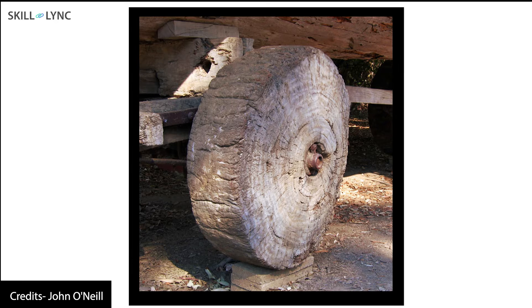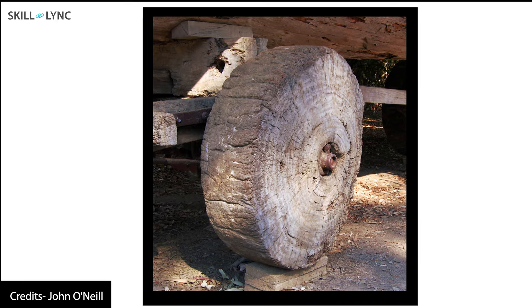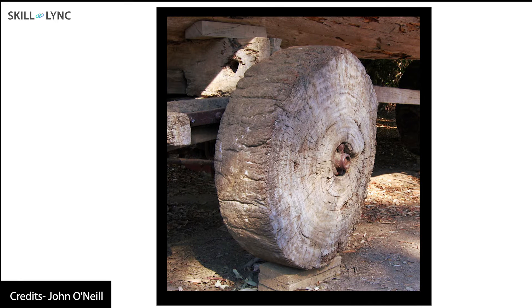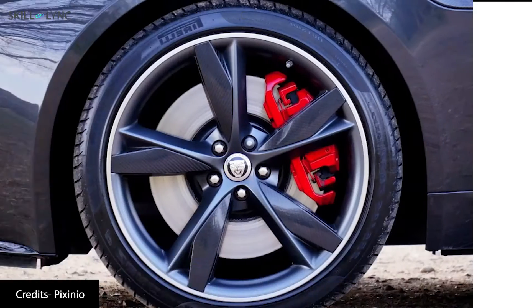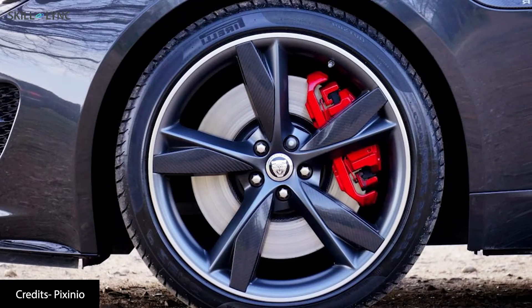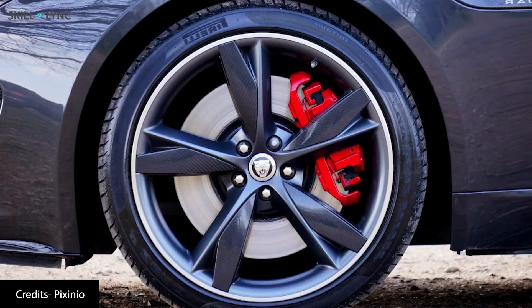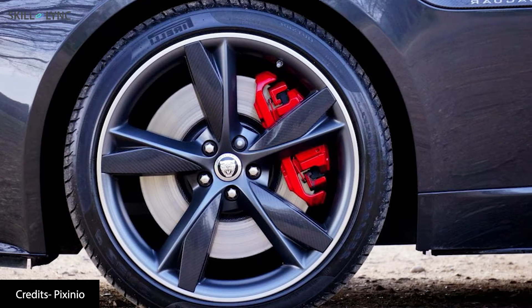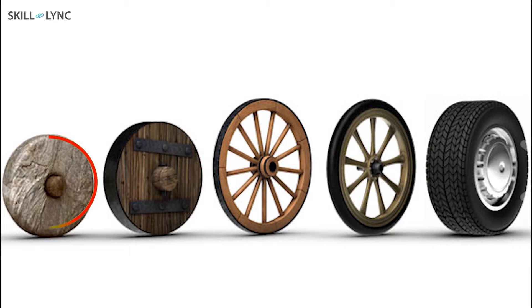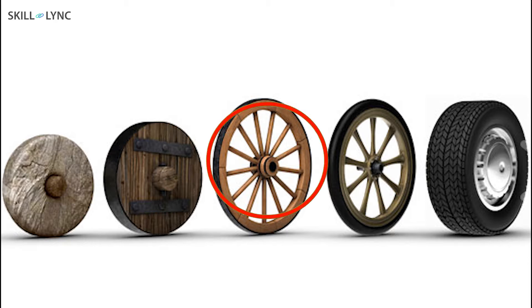This was done to reduce the weight of the wheel, and hence wooden wheels were much easier to roll. Modern wheels have come a long way from these ancient wooden and stone wheels. We moved from heavy stone wheels to lighter wood wheels, and to make the wheels even lighter, wheels with spokes were made.